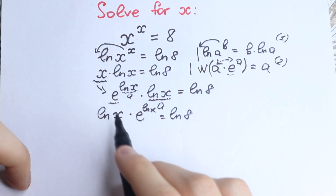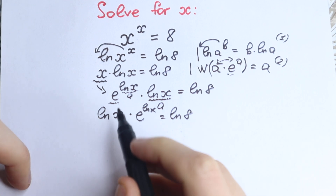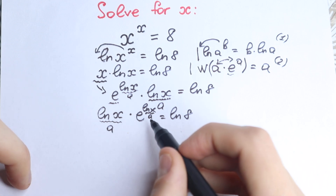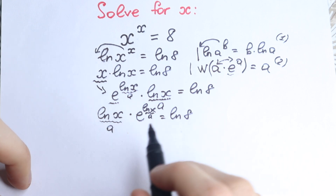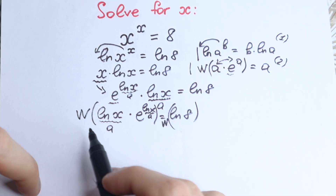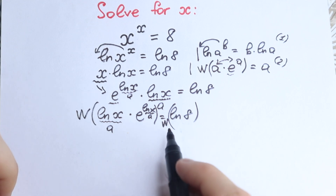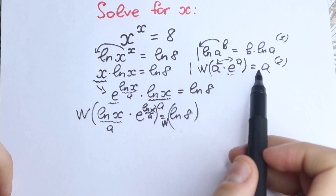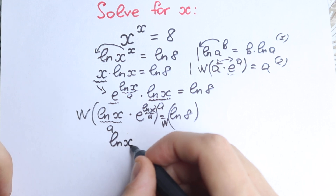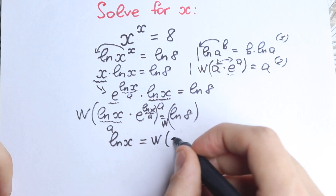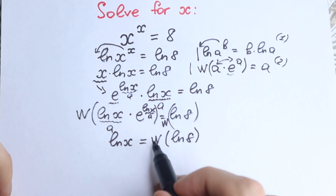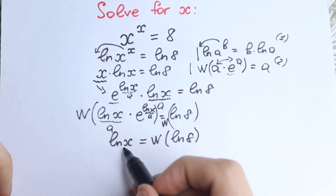Right now let's look closely. We have ln(x) as our a, and we have the same ln(x) as the power of e. So we have a times e to the power a equal to ln(8). We can now apply the Lambert W function to both sides. On the left hand side, by the definition of Lambert W, we get simply ln(x). So: natural log x equals W(ln 8), where W is the Lambert W function.